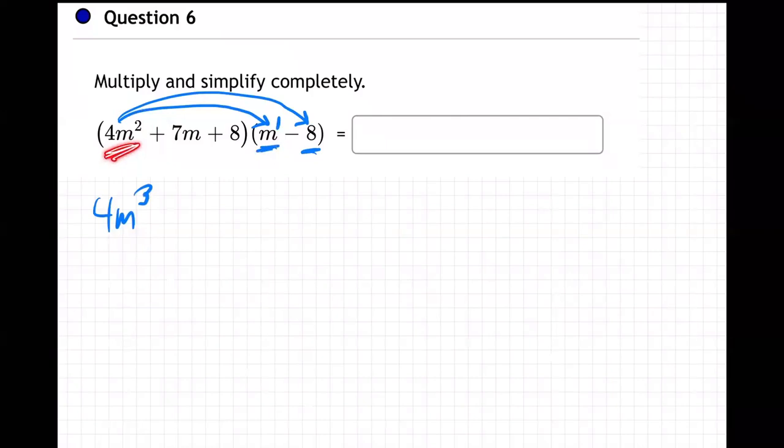And then 4m squared times minus 8 is minus 32m squared. And he is now done. He had his turn. He went to both of the other two. Now, it's the 7m's turn, and he's going to go to both of those two.